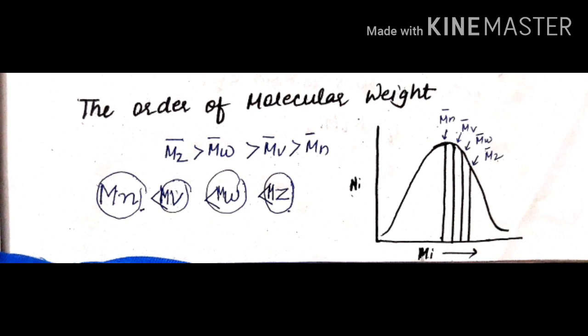In the graph, MZ is the highest value, then comes MW, then MV, then MN in decreasing order of molar mass.